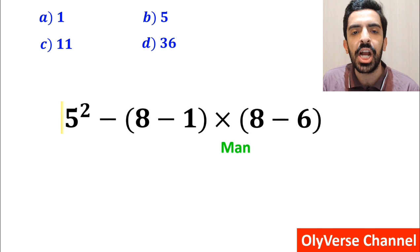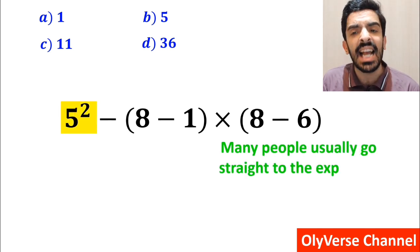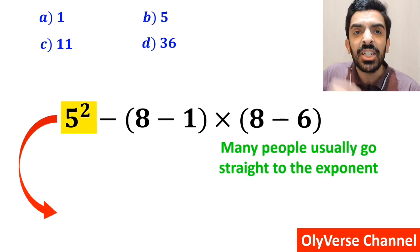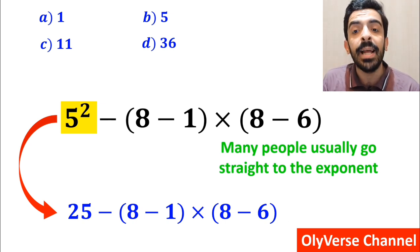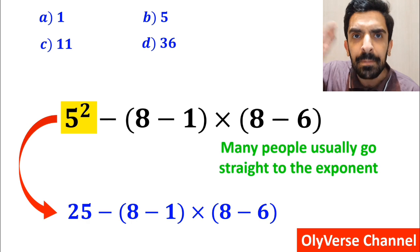Let's go through this question step by step and solve it together. And the first step to solve this question, many people usually go straight to the exponent and write the whole expression in the simplified form below: 25 minus 8 minus 1 inside the parenthesis, then multiplied by 8 minus 6 inside the parenthesis.